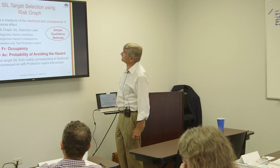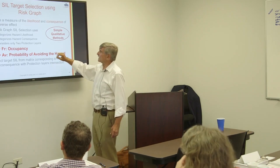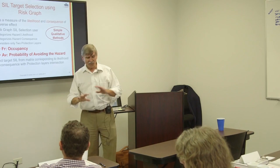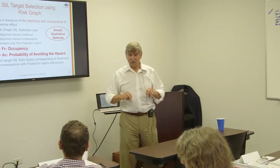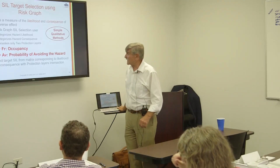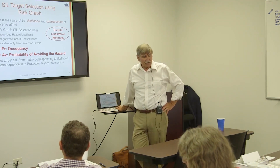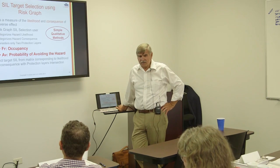In a risk graph, you might estimate the likelihood as a category, and you might estimate the consequence as a category — for injury, fatalities, economics, or environmental — and then consider occupancy or probability of avoidance. It's very simple; there are only two layers of protection included in the method. This was originally developed for machine safety applications.